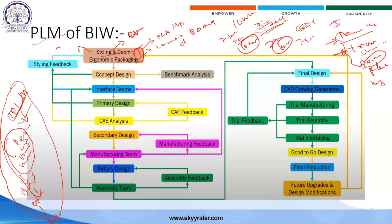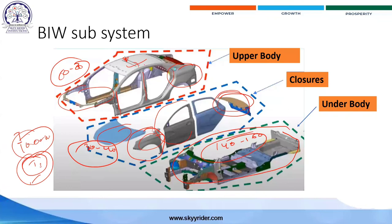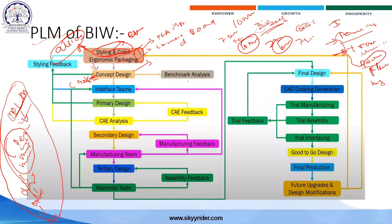The concept designer takes the styling skeleton and designs all the detailed structural components. The major software used for designing BIW in the industry includes CATIA, SolidWorks, and NX CAT. Maximum companies in the industry, including General Motors, use CATIA for BIW design.